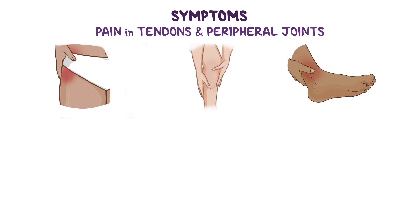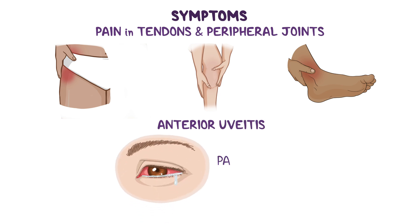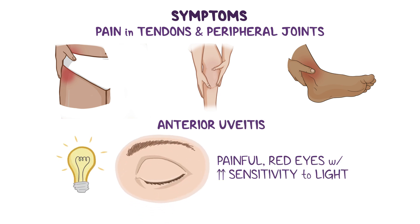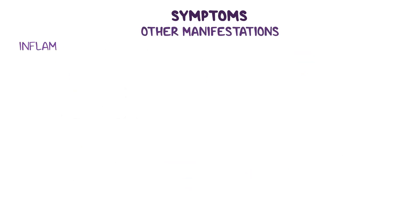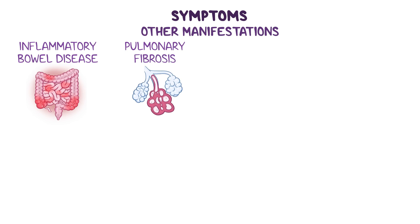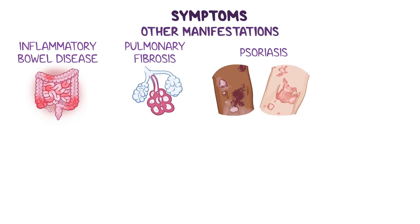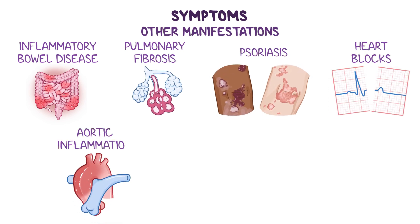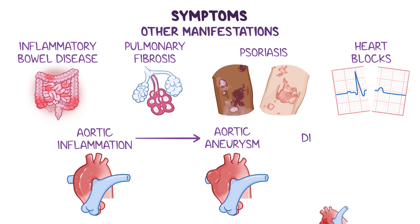AS can also lead to several other extra-articular manifestations, such as anterior uveitis, causing painful red eyes with increased sensitivity to light. Other important manifestations include inflammatory bowel disease, pulmonary fibrosis, psoriasis, heart blocks, and aortic inflammation, which can potentially lead to aortic aneurysm and dissection.